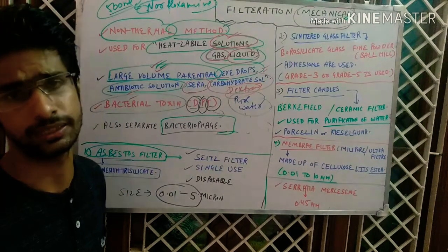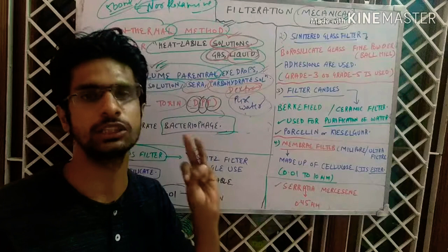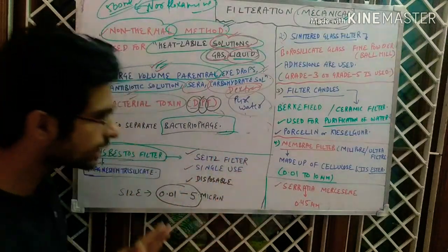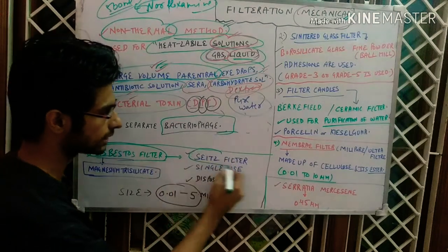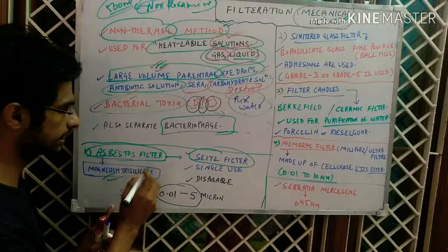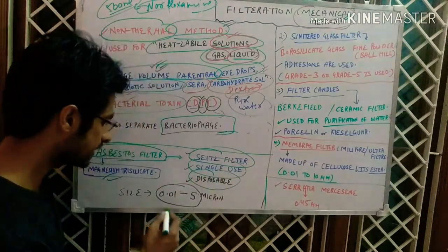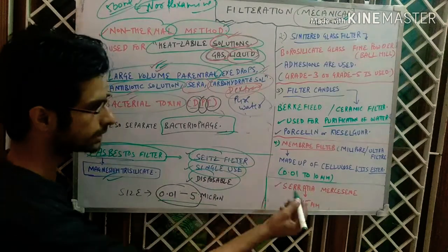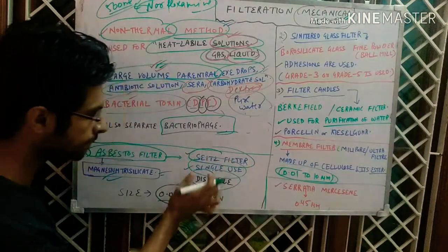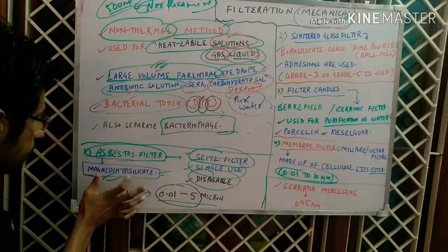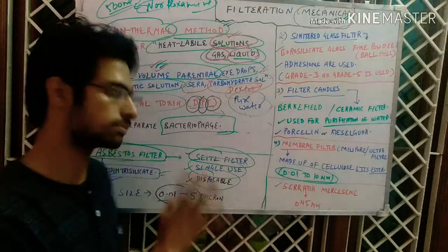Now for the types of filters. When discussing filter types, three main points to consider are: what the filter is made of, its pore size, and whether it is single-use or multiple-use. The Seitz filter (also called the asbestos filter) is made up of magnesium trisilicate — this is an important point. It is a single-use, disposable filter. The key facts to remember are: magnesium trisilicate composition and single-use nature.